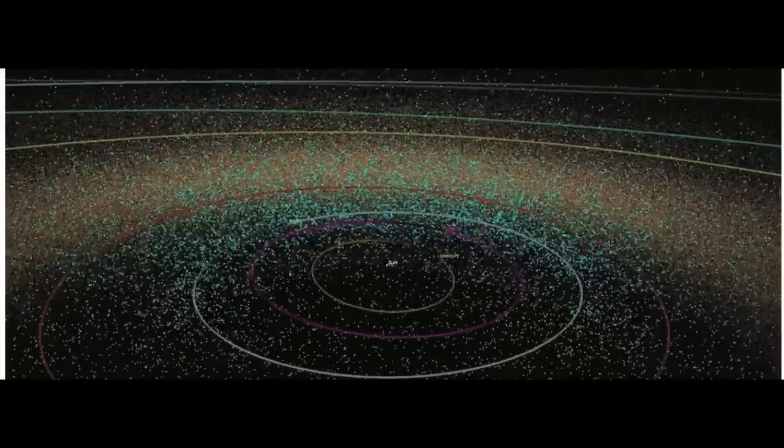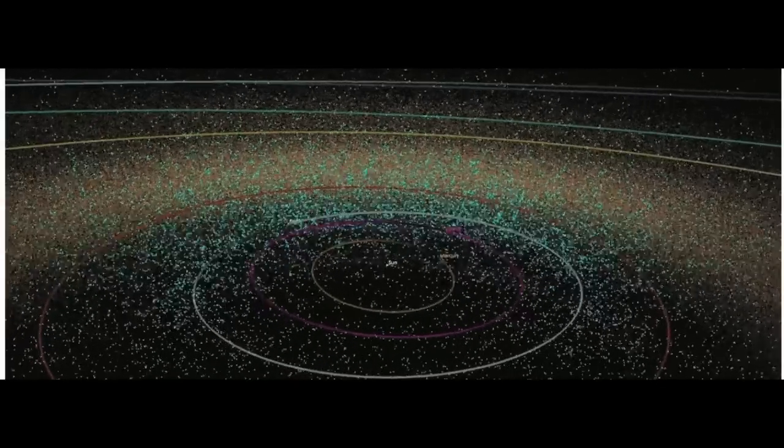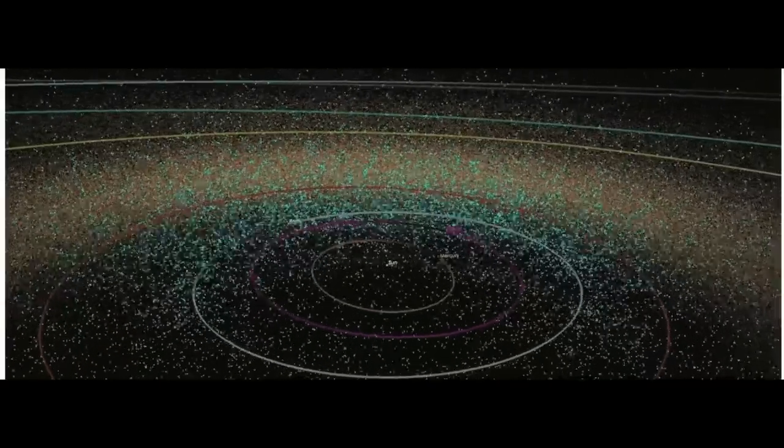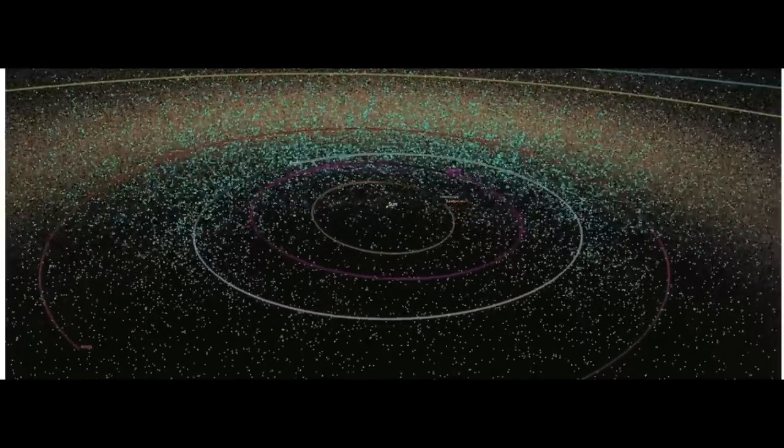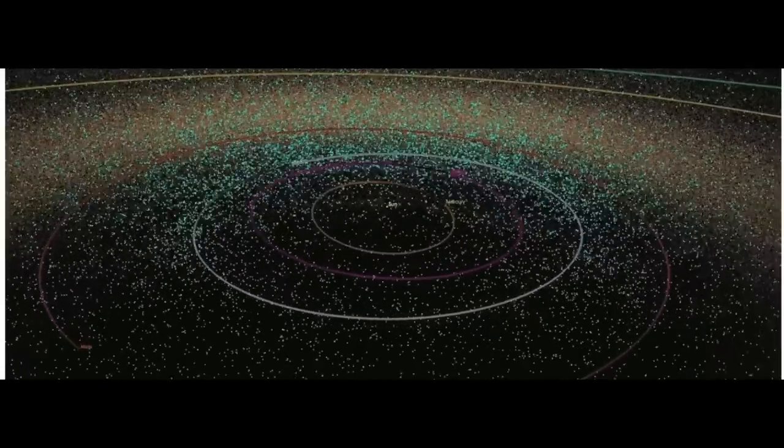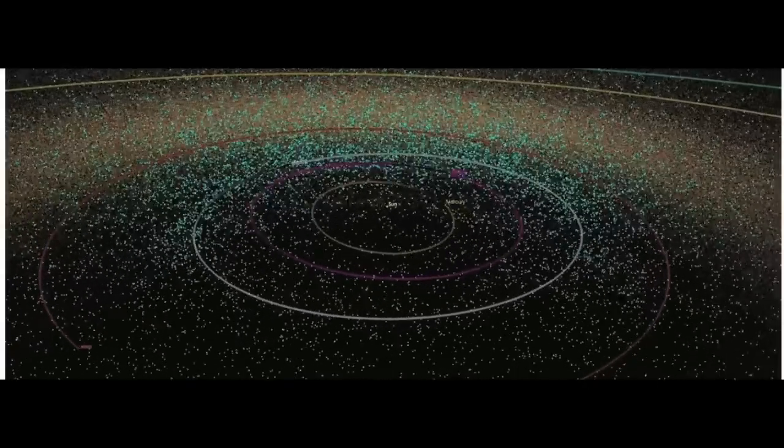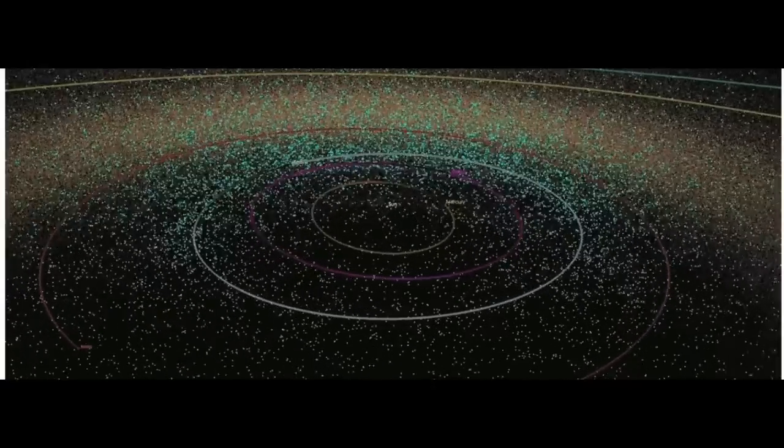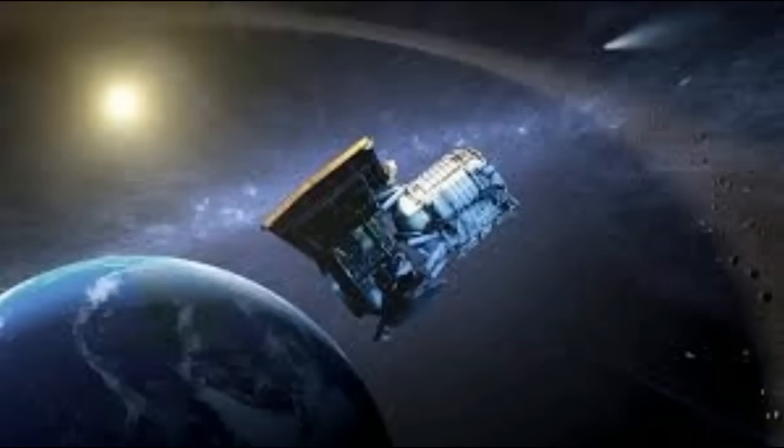Chodas knows this thanks to CNEO's precise orbit calculations using observation data submitted to the Minor Planet Center by observatories all over the world. They detect and track the motion of asteroids and comets.